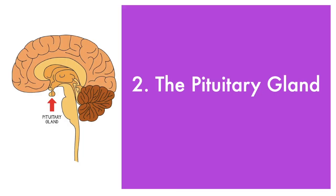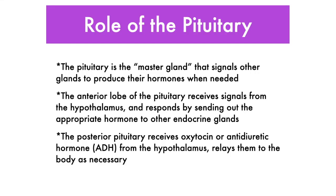The pituitary gland is located a little bit lower from the hypothalamus. It's referred to as the master gland, as it signals other glands to produce certain hormones when needed. Primarily the anterior lobe receives signals — we're going to focus mainly on the anterior pituitary — and it sends out certain hormones to other endocrine glands. The posterior pituitary primarily receives hormones such as oxytocin and antidiuretic hormone from the hypothalamus and relays them through the body.